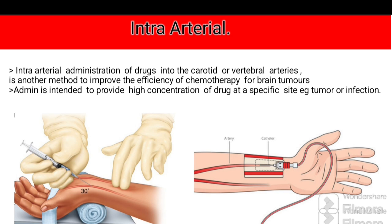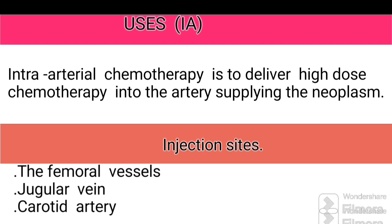Intra-arterial: administration of drugs into the carotid or vertebral arteries is a method to improve the efficiency of chemotherapy for brain tumors. Administration is intended to provide a high concentration of drugs at a specific site, such as a tumor or infection, and tends to reduce systemic effects. Intra-arterial injection is used in chemotherapy to deliver high-dose chemotherapy into the artery supplying the neoplasm. Injection sites include the femoral vessels, jugular vein, and carotid artery.